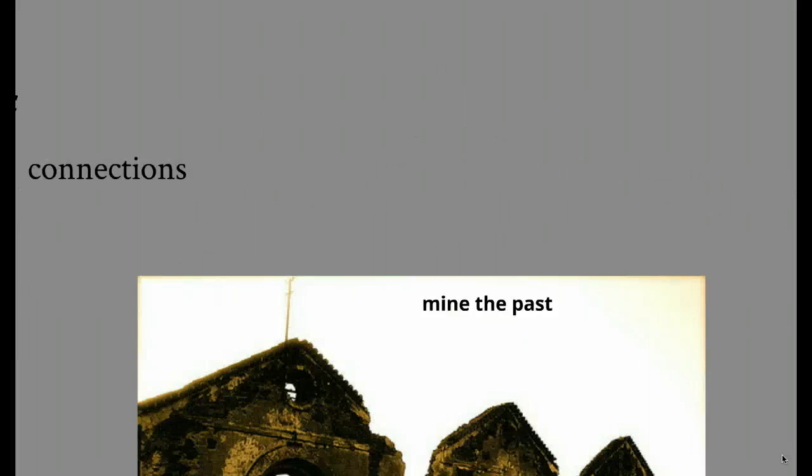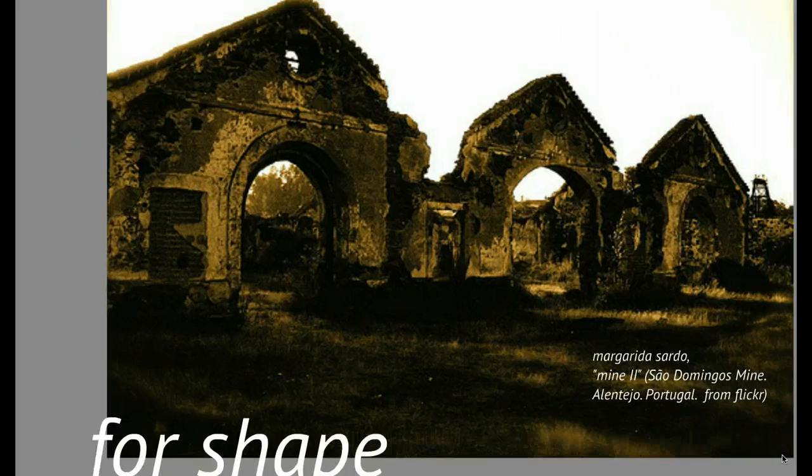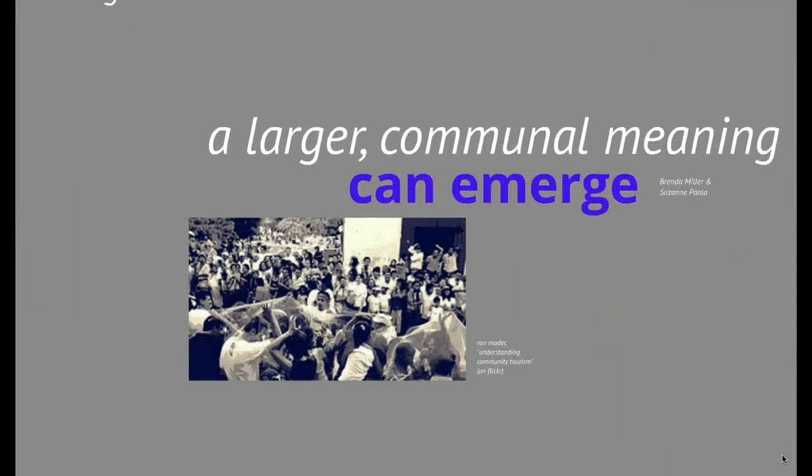So what is a memoir? A memoir explores memory in such a way that it leads to discovery of significance or meaning, which can then be connected to the experiences, insights, empathy, and ideas of others. A memoir doesn't tell the story of a life; rather it explores a story or stories from a life, as Barrington said in Writing the Memoir. This means that it's selective, it's specific. In a memoir, in the words of Brenda Miller and Suzanne Paola, the writer can mine the past, examining it for shape and meaning, in the belief that from that act, a larger communal meaning can emerge.